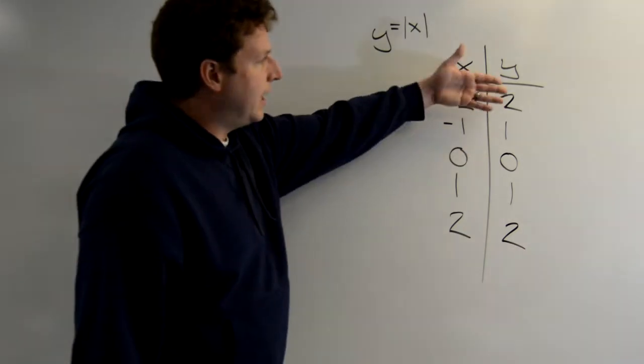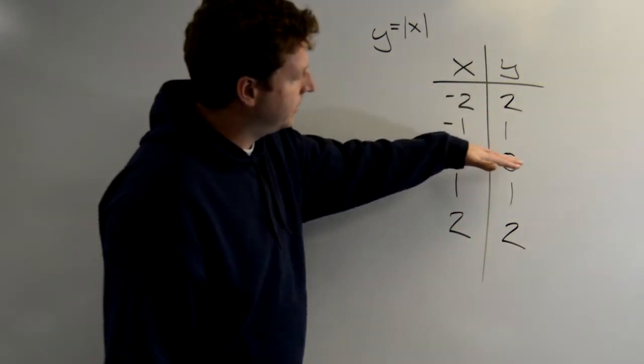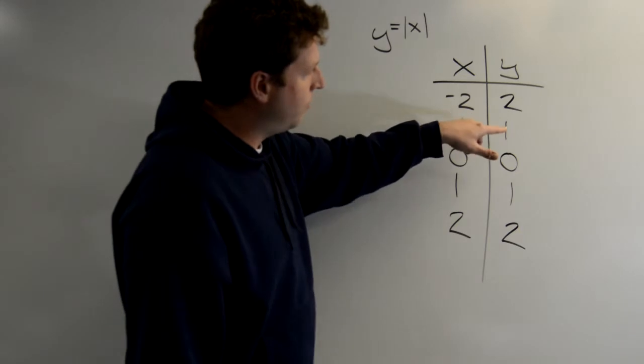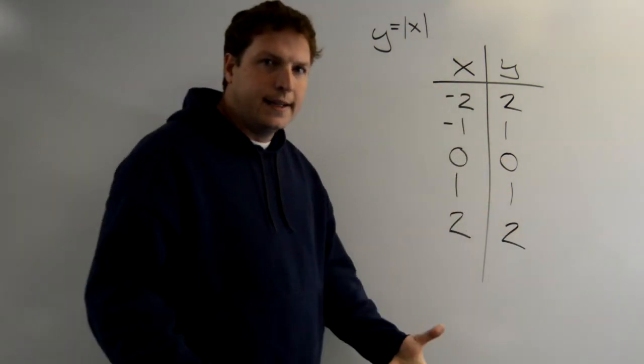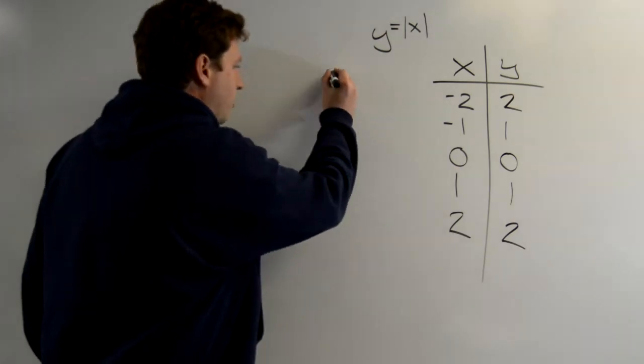So you can see it's kind of mirrored itself. The 0 here, and then we have 1 and 2 on the y, and then 1 and 2 on the y. It's kind of interesting. Let's look at it on a graph real quick.